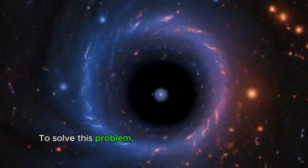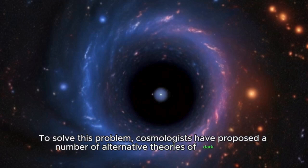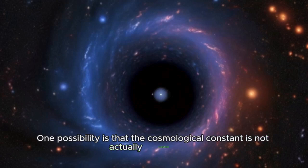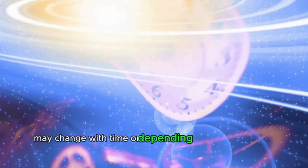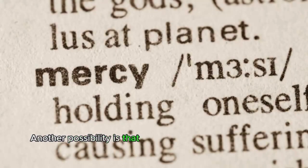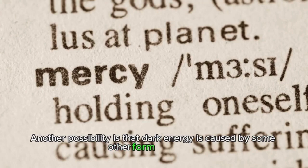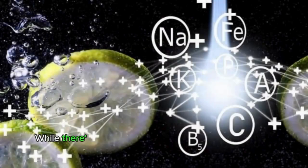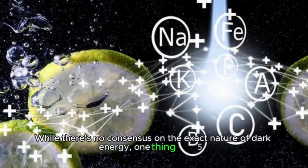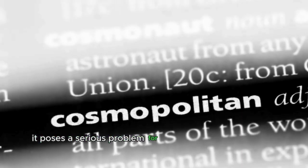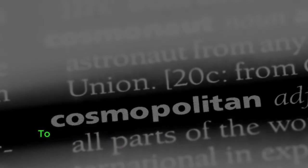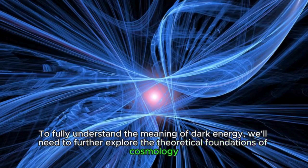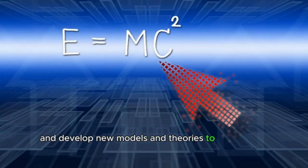To solve this problem, cosmologists have proposed a number of alternative theories of dark energy. One possibility is that the cosmological constant is not actually constant, but may change with time or depending on the condition of the universe. Another possibility is that dark energy is caused by some other form of energy, such as a new field or particle, which has not yet been discovered. While there's no consensus on the exact nature of dark energy, one thing is clear: it poses a serious problem for our current understanding of the universe. To fully understand the meaning of dark energy, we'll need to further explore the theoretical foundations of cosmology and develop new models and theories to explain this mysterious force.